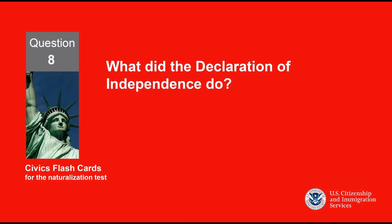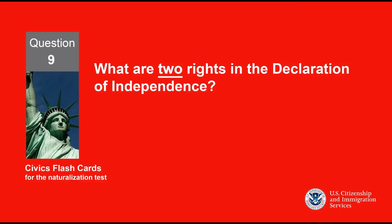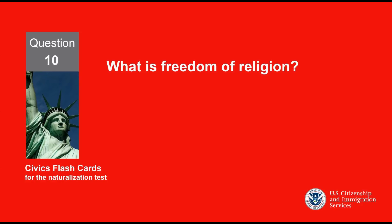What did the Declaration of Independence do? Said that the United States is free from Great Britain. What are two rights in the Declaration of Independence? Life. Liberty. What is freedom of religion? You can practice any religion or not practice a religion.